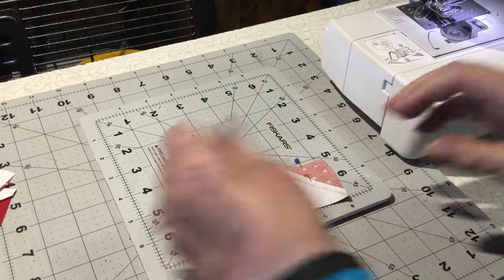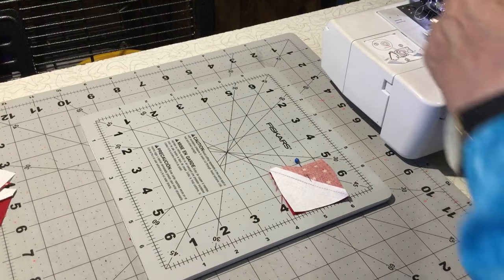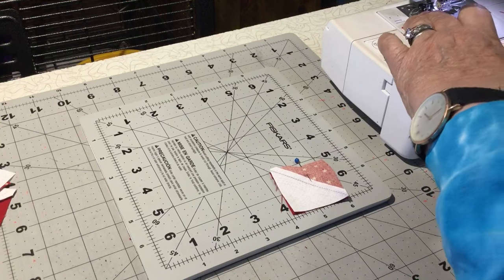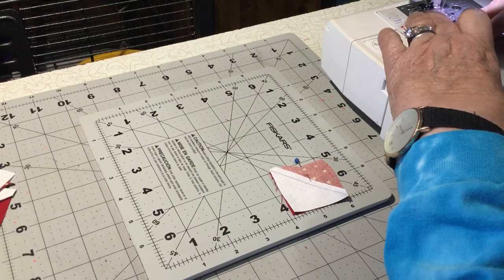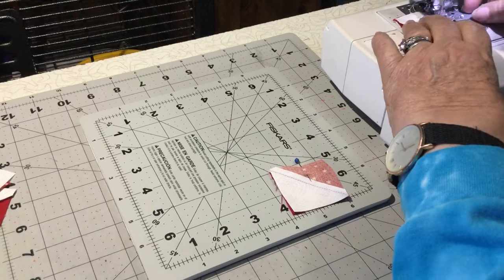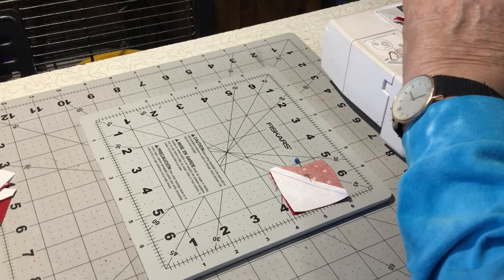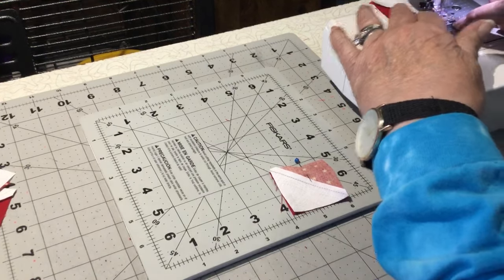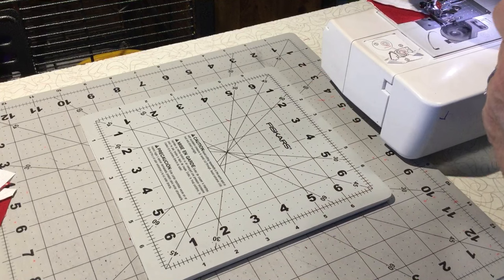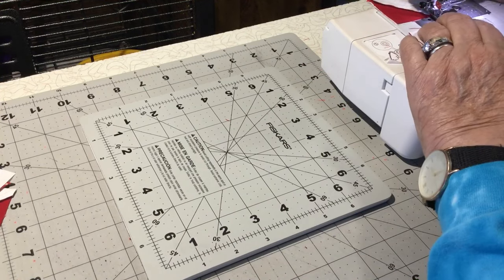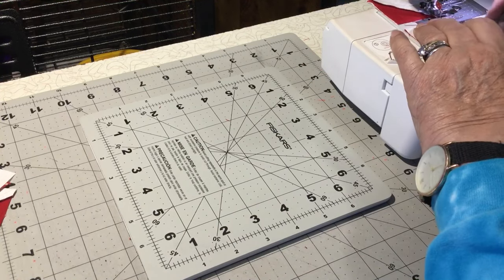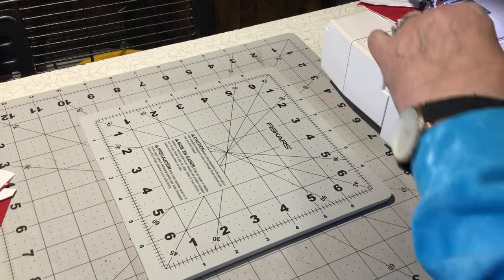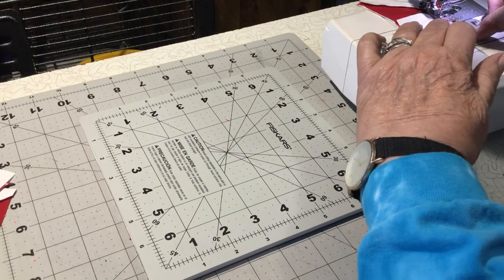So I'm going to sew this one pinwheel block together. And then I'll find my foot pedal. Once you start sewing, you know you got the correct side. You can take your pin out. I always start with the bulkiest end. That way I can pick up my presser foot. Start across. Remove the pin. Make sure everything's positioned right.